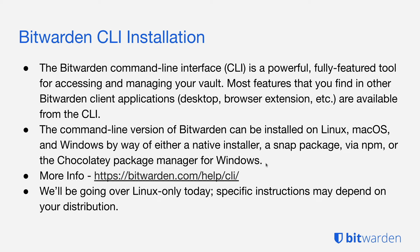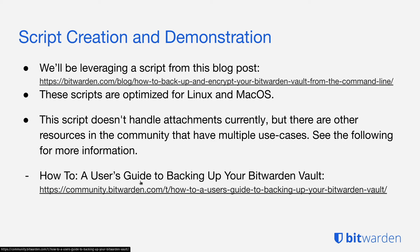More information on the CLI can be found on our help center. Today we're going to go over the Linux installation, though specific instructions may depend on your distribution. We're going to be leveraging a script from one of our blog posts written by one of our technical docs writers. It includes scripts for interactive backups as well as non-interactive backups if you want to schedule something via a cron job. Keep in mind these scripts are optimized for Linux and macOS and don't currently handle attachments. There are other resources in our community forums — a user's guide to backing up your vault — that do include an option for backing up attachments as well.